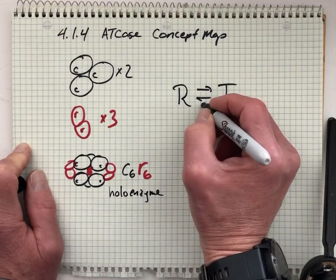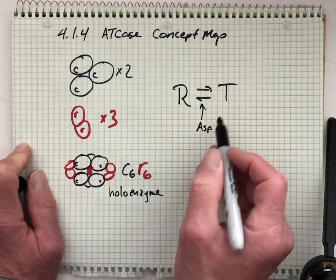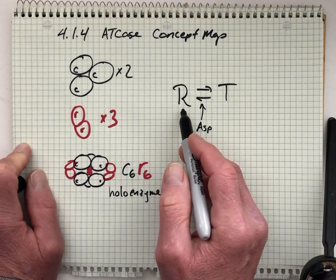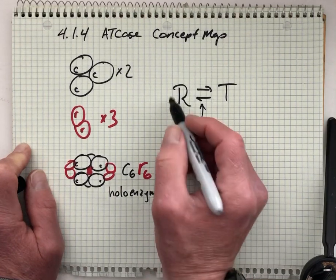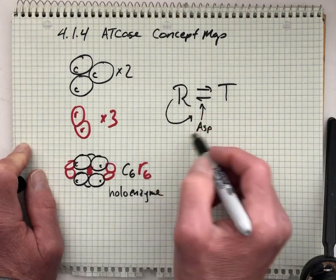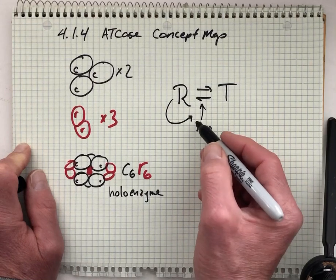The substrate binding, so binding of aspartate, will begin to nudge this equilibrium towards the R form. And that structure, the R form, encourages binding of more aspartate. So this is a cooperative type of interaction.